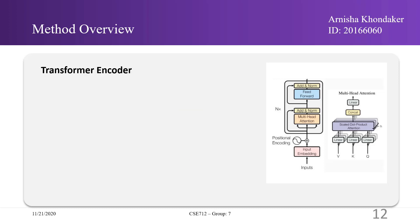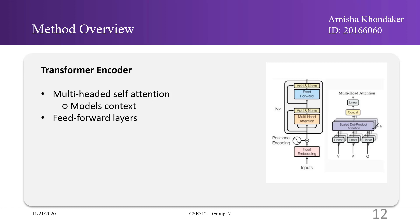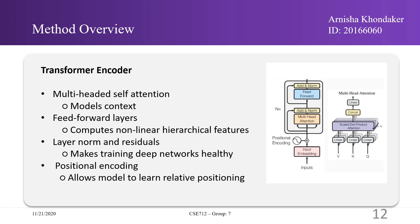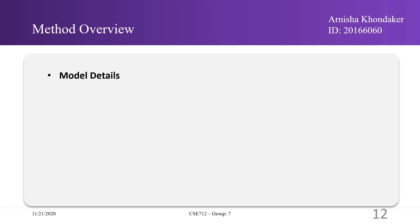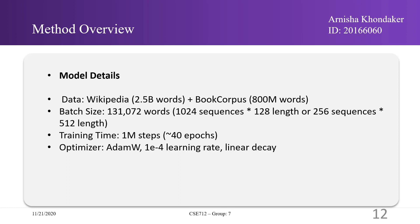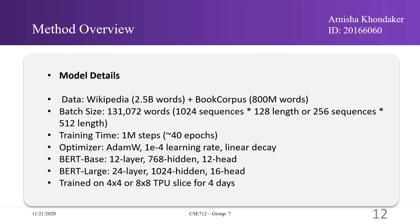BERT's model architecture is a multi-layer bidirectional transformer encoder based on the original implementation described by Vaswani et al. The transformer encoder has multi-headed self-attention for modeling context, feed-forward layers for computing non-linear hierarchical features, layer norms and residuals for training deep networks, and positional encoding to allow the model to learn relative positioning. As training corpus, the authors used English Wikipedia and Book Corpus with a batch size of approximately 130,000 words for one million steps, approximately 40 epochs. Adam was used as optimizer and results were reported in two model sizes: BERT Base and BERT Large. Training of BERT Base was performed on four Cloud TPUs and BERT Large on eight Cloud TPUs, with pre-training taking four days to complete.